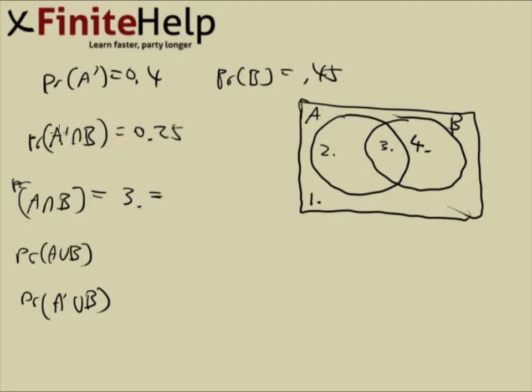intersect B is 0.25. A prime intersect B reads like the B without the A. This is the easiest way to understand what this is. The B without the A. And that's exactly what four is. This is 0.25.